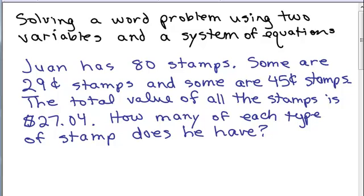This lends itself to a system of equations because there's two things we're looking for. We're looking for the number of 45-cent stamps and the number of 29-cent stamps.